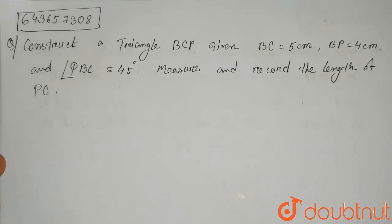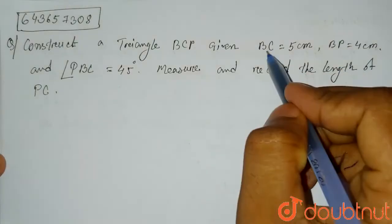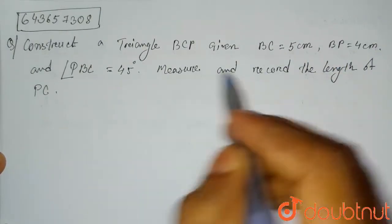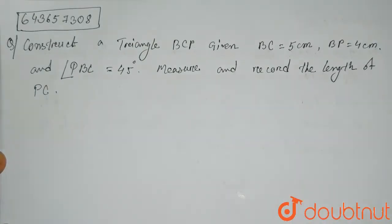Hello everyone, the question is construct a triangle BCP, given BC equals to 5 cm, BP equals to 4 cm, and angle PBC is 45 degrees. Measure then record the length of PC.